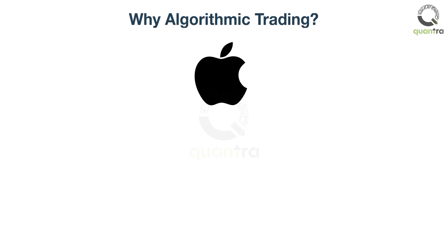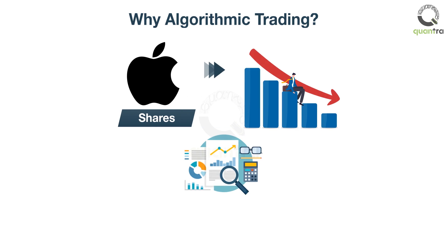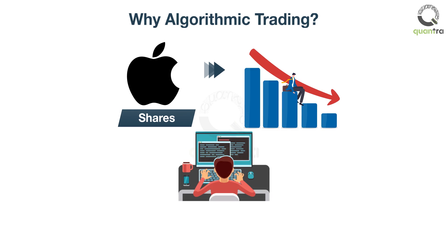In another scenario, suppose you own Apple shares. Somewhere in the middle of the day, Apple announces that its quarterly sales have fallen. Factoring in this news, the stock price begins to fall. By the time you analyze the earnings and come to the conclusion to exit the position, the stock has already fallen more. Would it not be great if you had a system in place which would quickly analyze and decide the action to take?